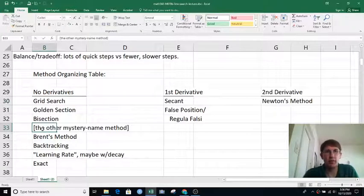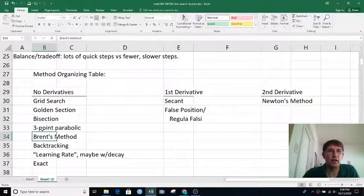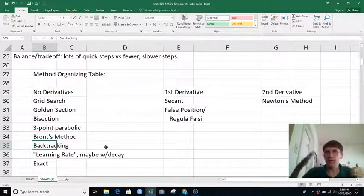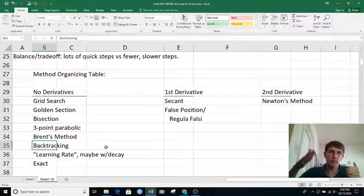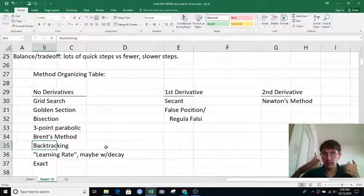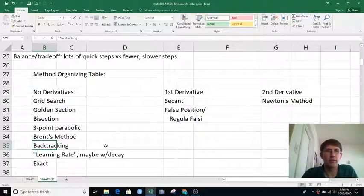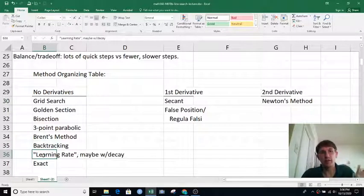We talked about Brent's method. Backtracking is even simpler than most of these. We just guess a large value and if that's big enough, keep decreasing it until the objective function starts going up again. That's fairly common in machine learning these days. We talked about learning rate in our other module.